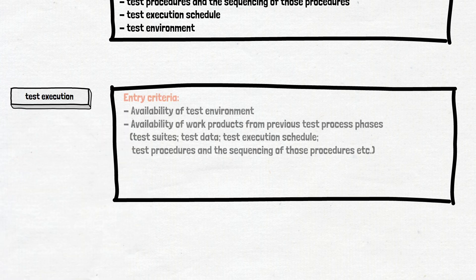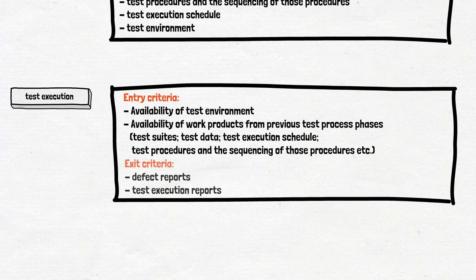To start the test execution activity, you need the test environment and the test suites, procedures, and schedule. Once the test execution cycles are finished, there are two main products available — defect reports and test execution reports. Testers inform the stakeholders about how many test cases are passed and failed, how many defects are found, and the severity of those defects. Depending on the decision taken by the stakeholders, the test process may repeat some activities — at least developers will fix bugs and testers will run tests again. Or, if the stakeholders decide they are satisfied with the quality of the product, the test process will move to the final stage.